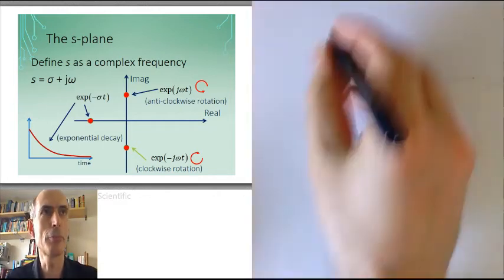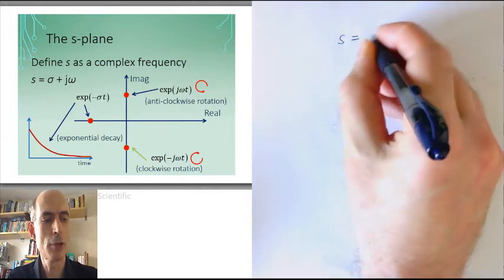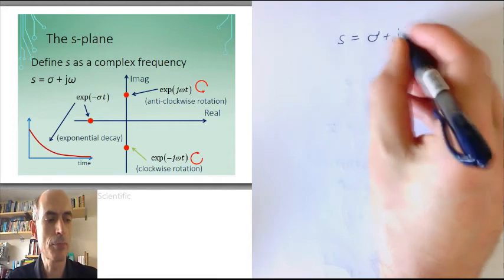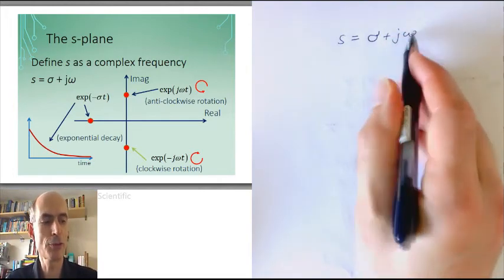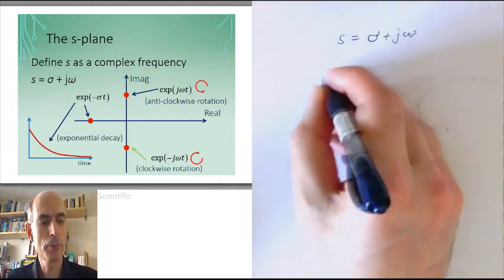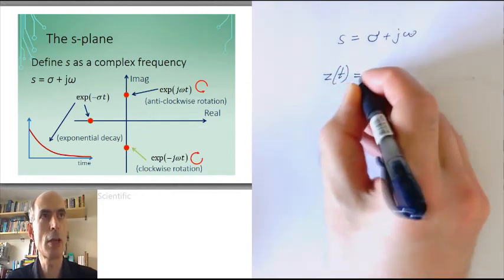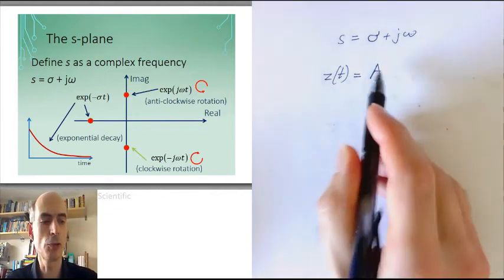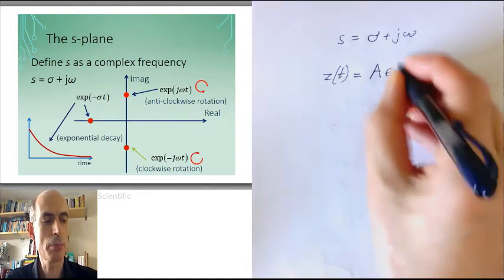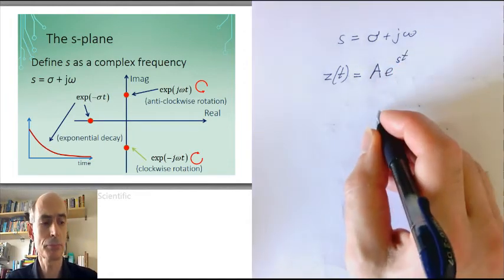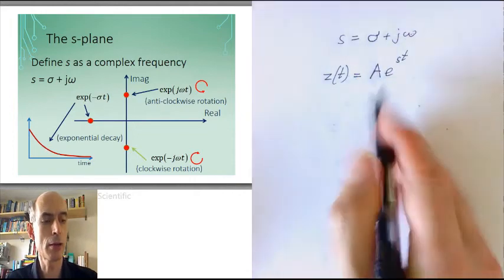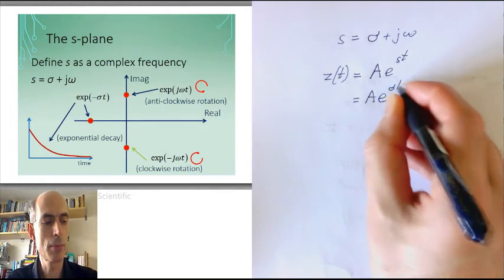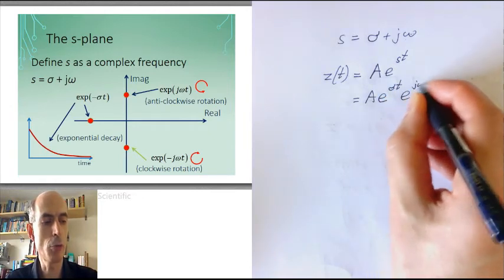We're using these complex numbers s, which is, I'll split that up into sigma, that's the real part of s, and omega, that's the imaginary part of s, so that in general my complex quantity z of t, function of time, is the amplitude at time t equals zero times e to the power of st. And I can substitute in from this expression here and write that as a times e to the power of sigma t times e to the power of j omega t.